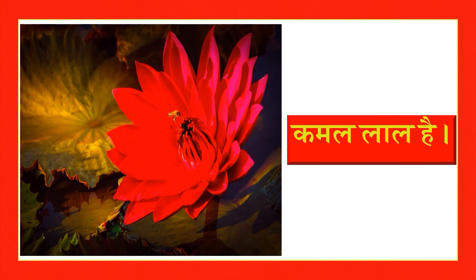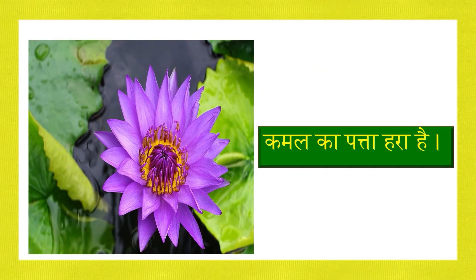अब आप इस चित्र को देखिये — कमल का रंग कैसा है? कमल गुलाबी भी है। फिर से बोलिये, कमल गुलाबी भी है। इस चित्र को देखिये — कमल बैंगनी है। फिर से बोलिये, कमल बैंगनी है। अब आप इस चित्र को देखिये — कमल लाल है। फिर से बोलिये, कमल लाल है। अब इस चित्र को देखिये — कमल के पत्ते का रंग कैसा है? कमल का पत्ता हरा है।